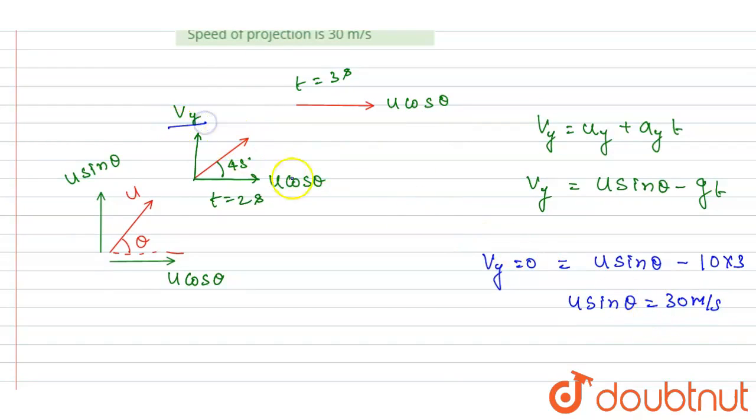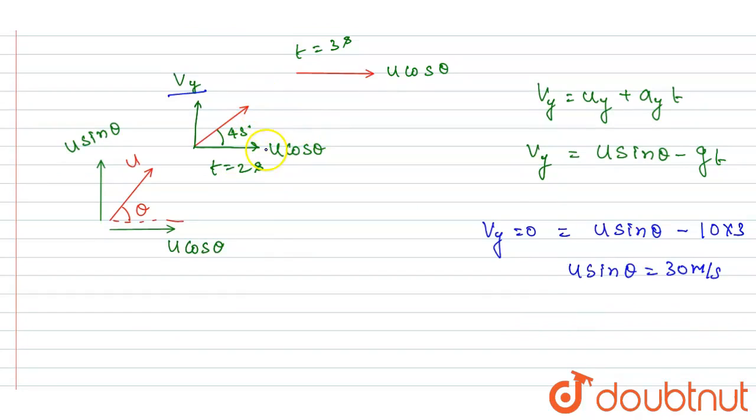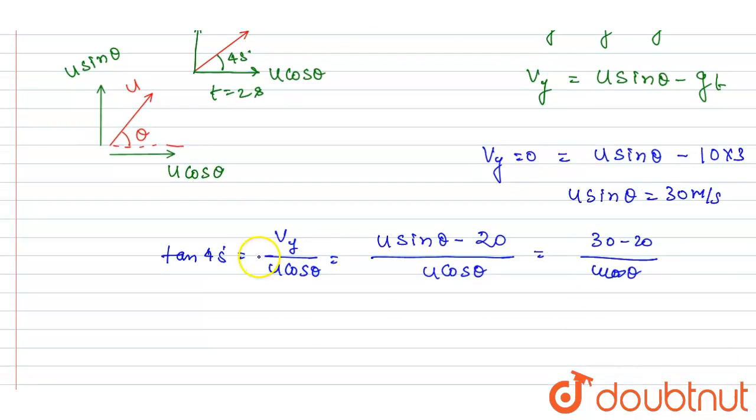Now if you got the u sin theta, you can also see here at t goes to 2 seconds, the angle made by this velocity vector with the horizontal is this. So I can write down 45 degrees equals v_y by u cos theta. V_y at t goes to 2 seconds, you will write u sin theta minus g into 2, that is 20, by u cos theta. So if you see, u sin theta is 30, 30 minus 20 by u cos theta, and it equals tan 45. So I will write u cos theta equals 10 meters per second.